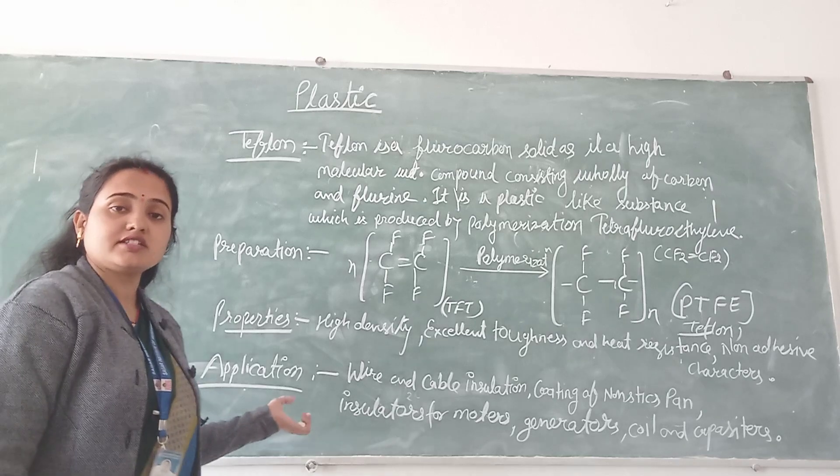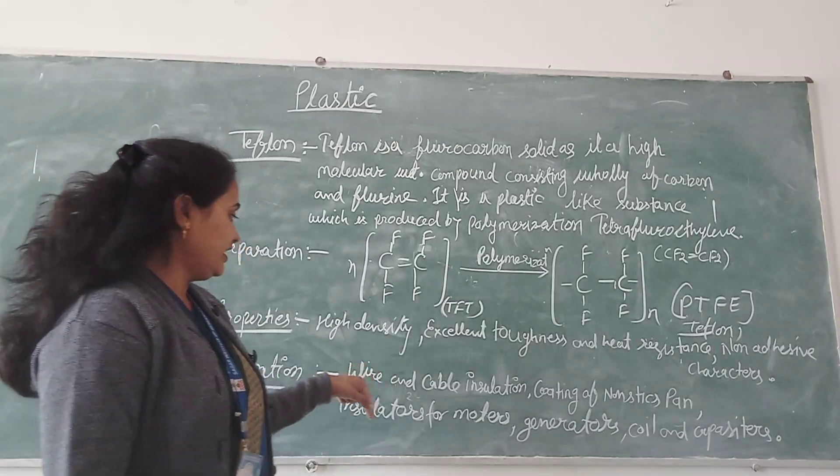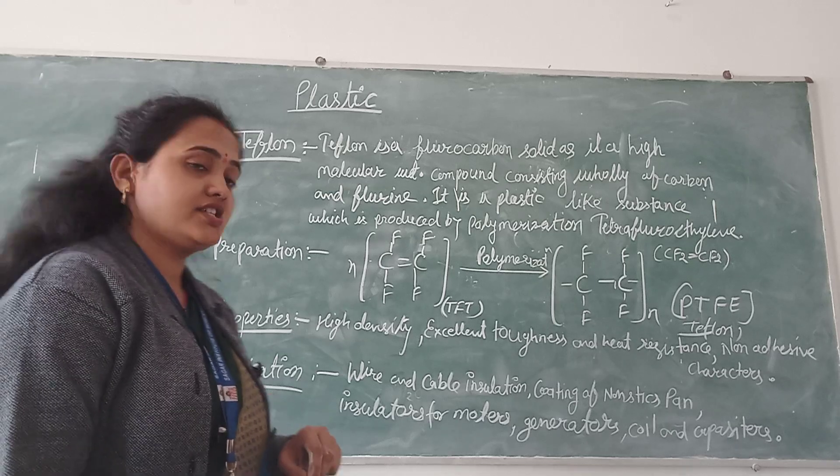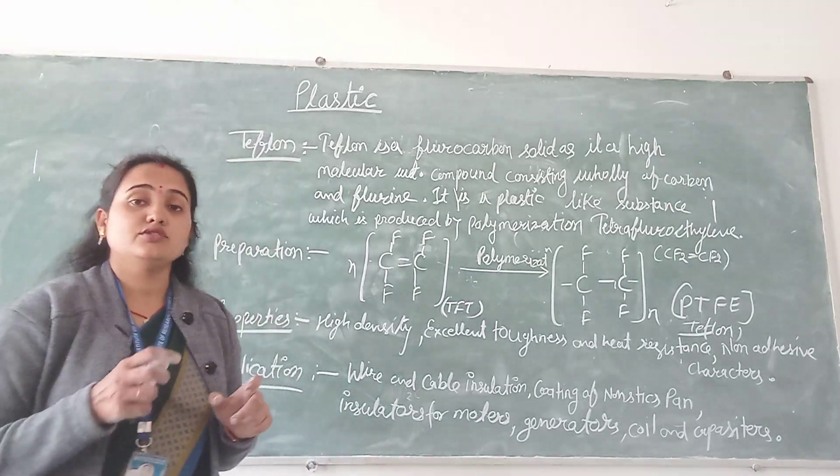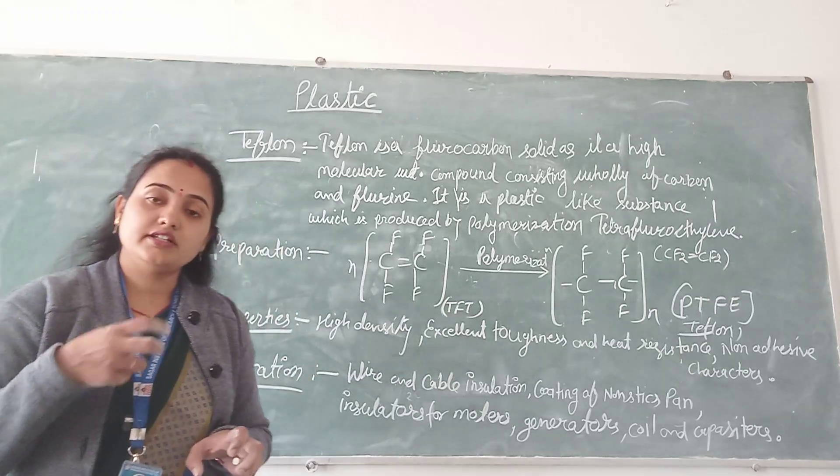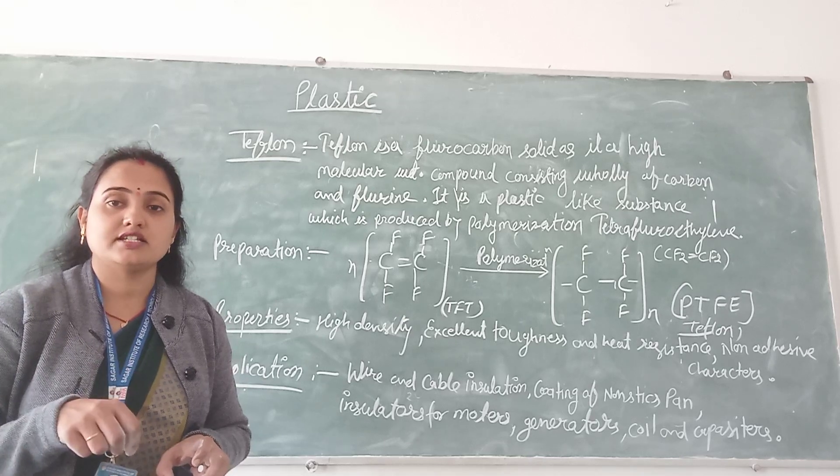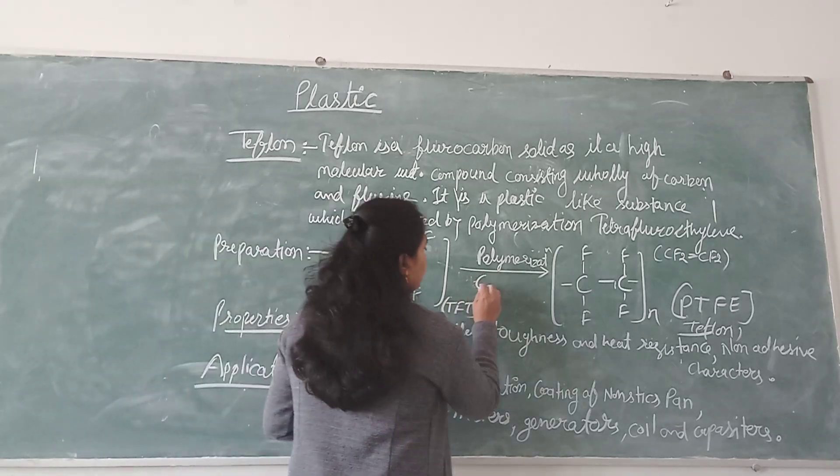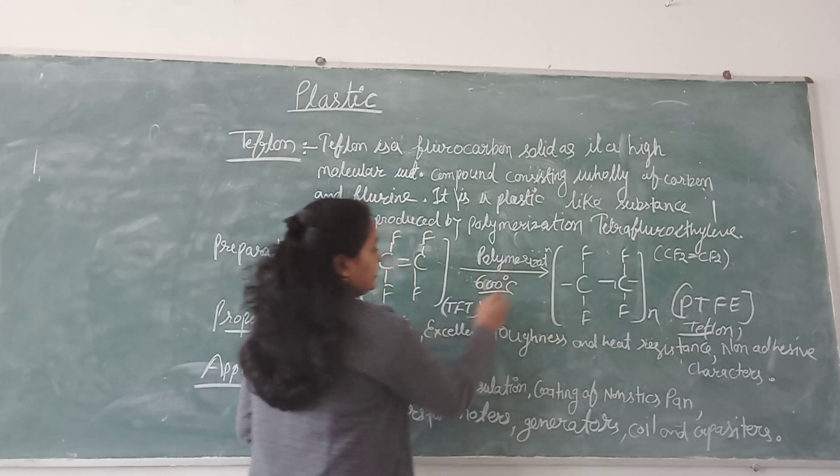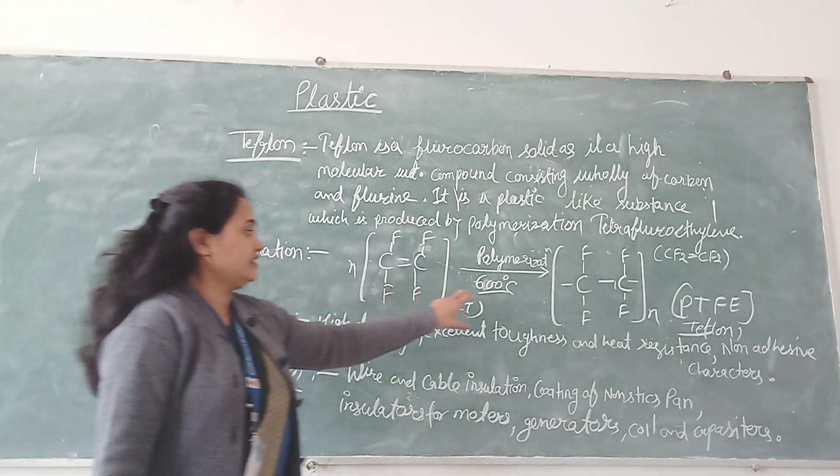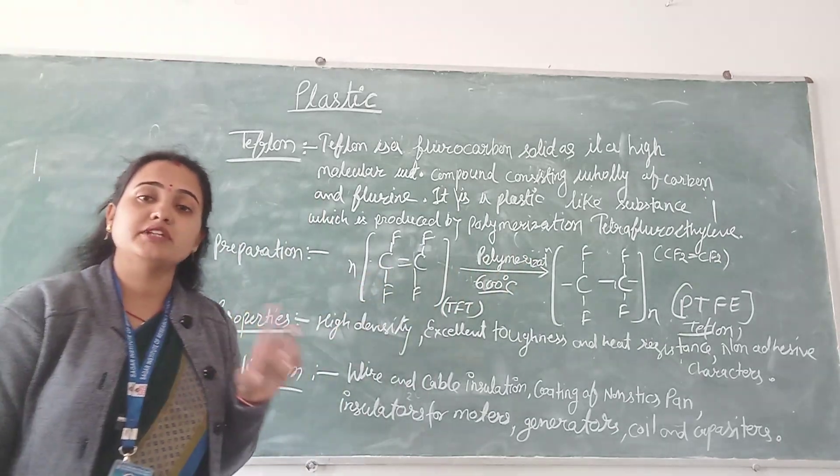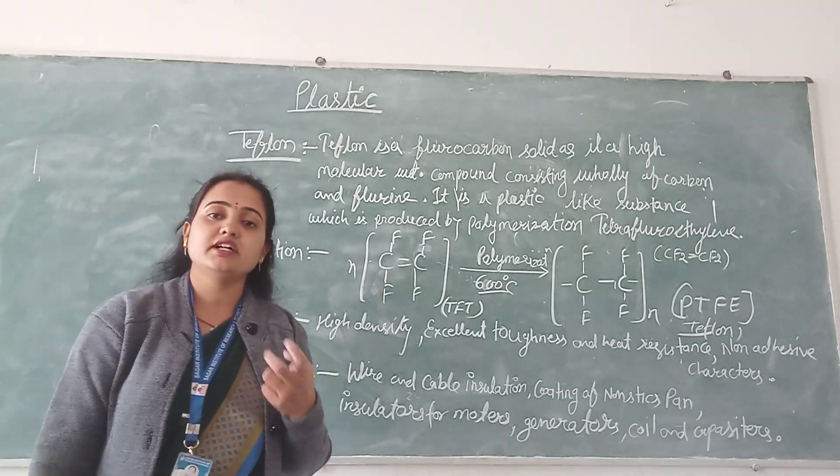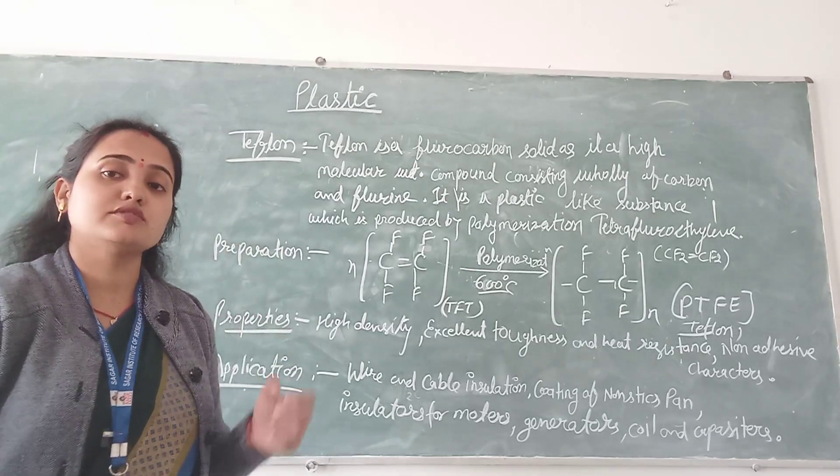So where are the applications used? Wire and cable insulation. Coating of non-stick pans. When we see that Teflon plastic is used in daily routine, the non-stick cookware coating is used because it has higher temperature resistance. Its temperature is up to 600 degrees centigrade. So generally we use it in daily routine non-stick pans, any of your utensils. There is coating definitely.